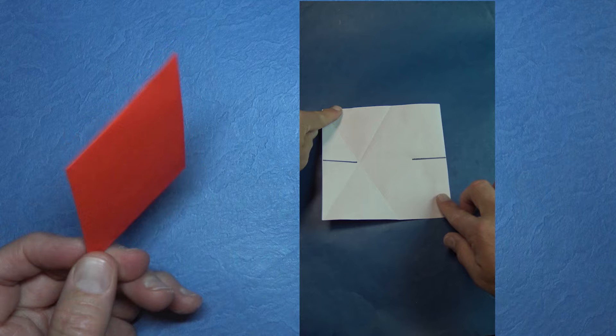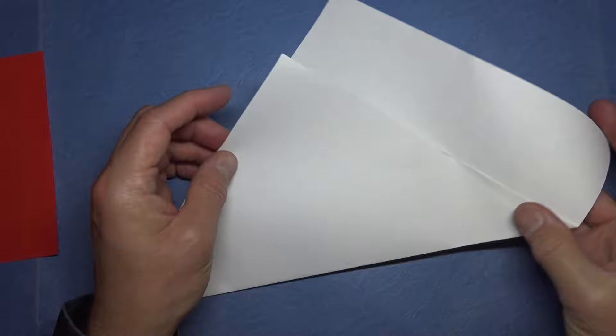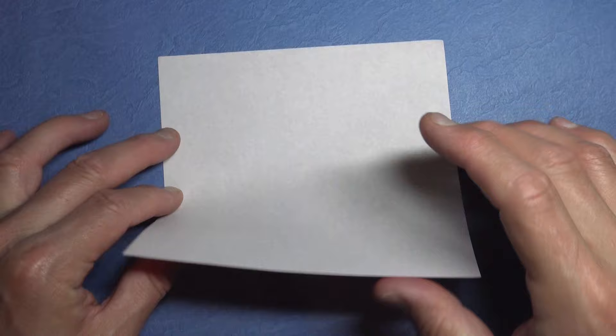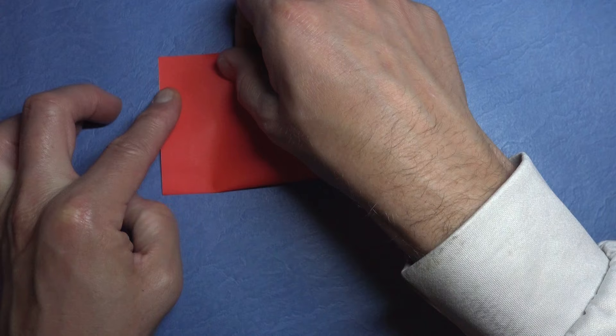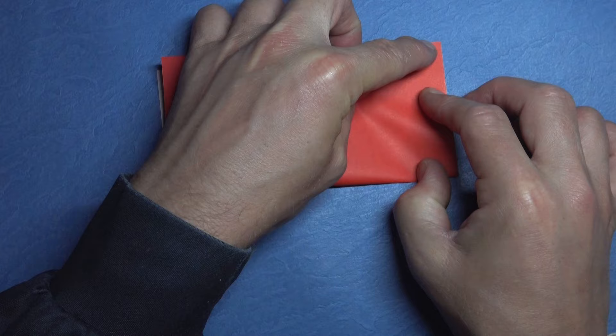So for this model I used a six inch square of kami, but you could use a sheet of printer paper cut square. All right, so begin white side up and fold in half, but we're just going to fold an inch on this side and an inch on this side. So align the corners and just fold an inch here, and align these two corners and fold an inch like that, and unfold.